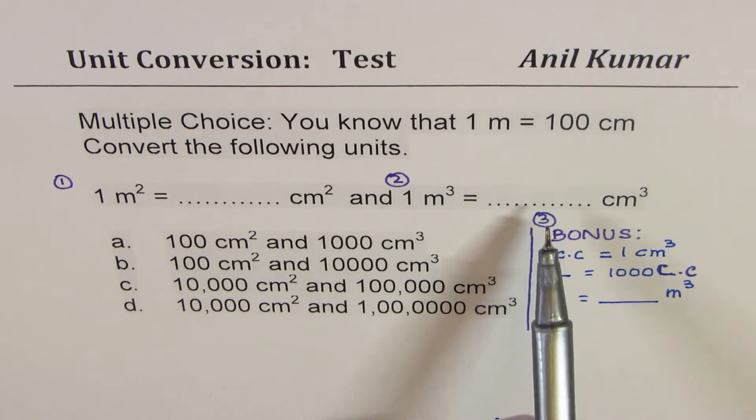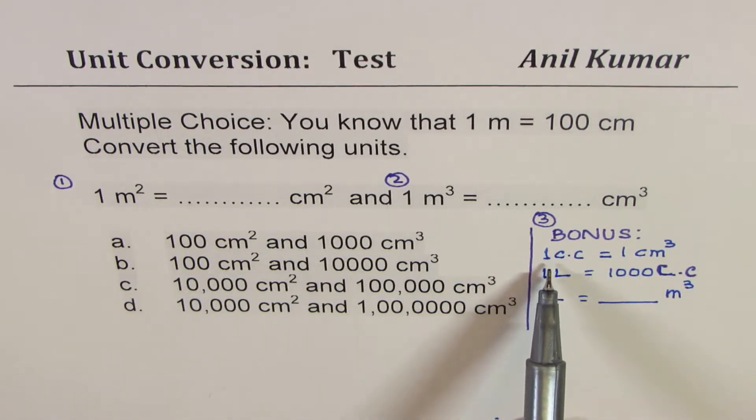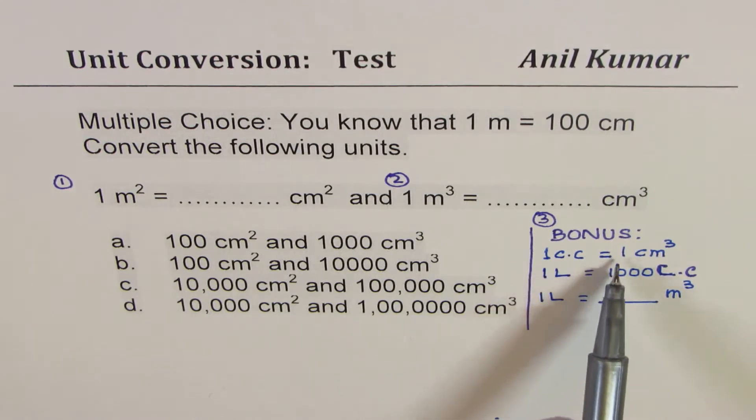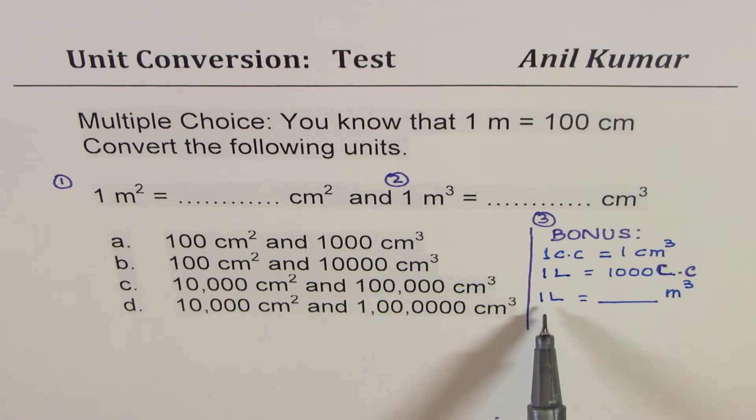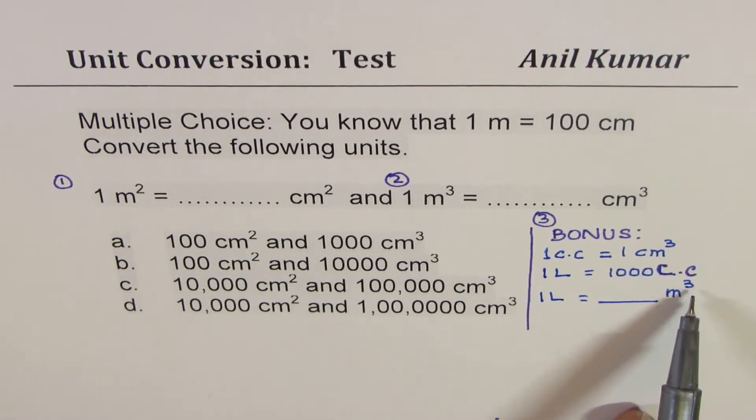Now the third question here is a bonus question where I have given you information that one cc is one centimeter cube and one liter is thousand cc's or thousand centimeter cube. But now you have to tell me one liter is how many meter cube. So that's your bonus question.